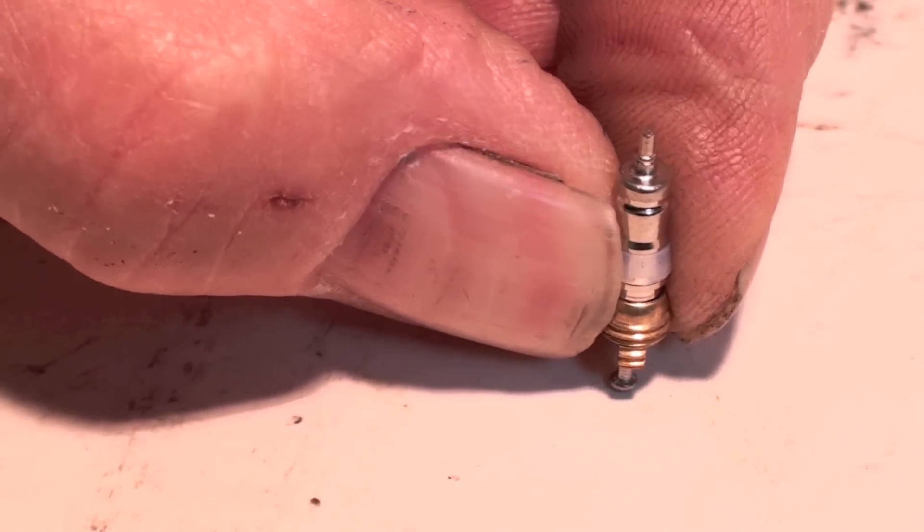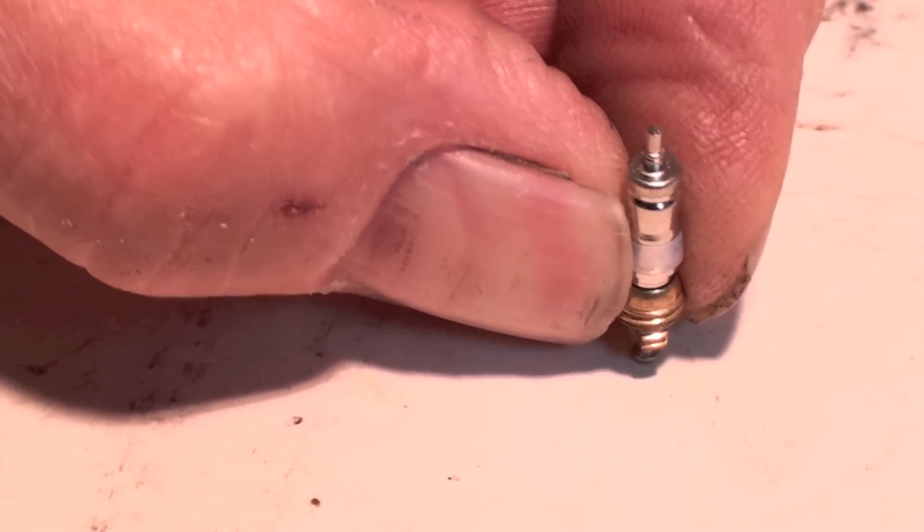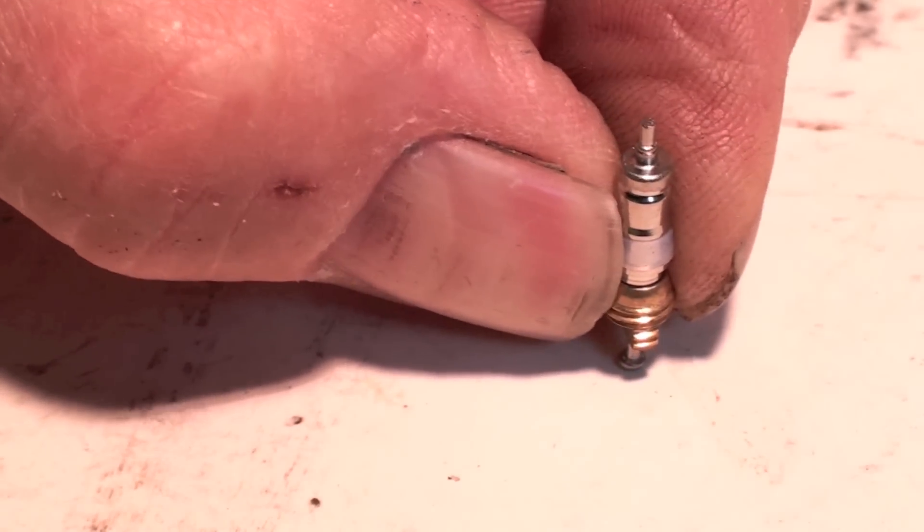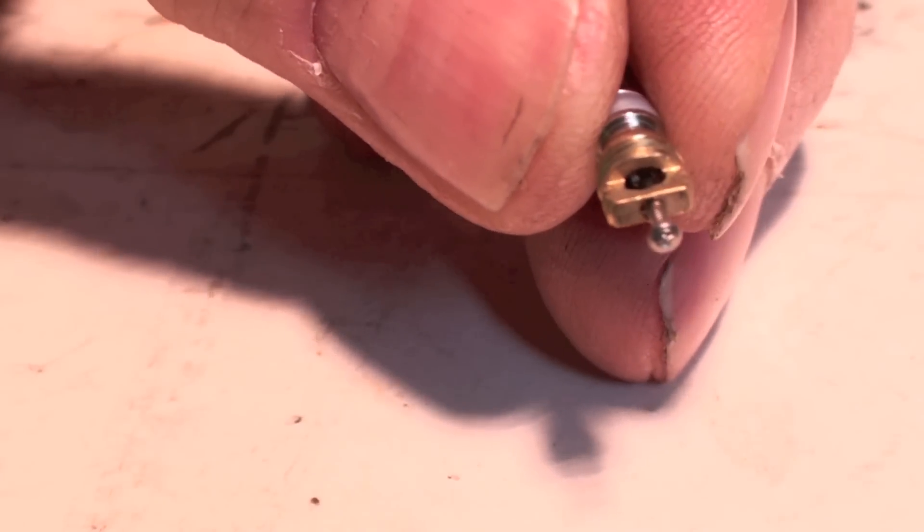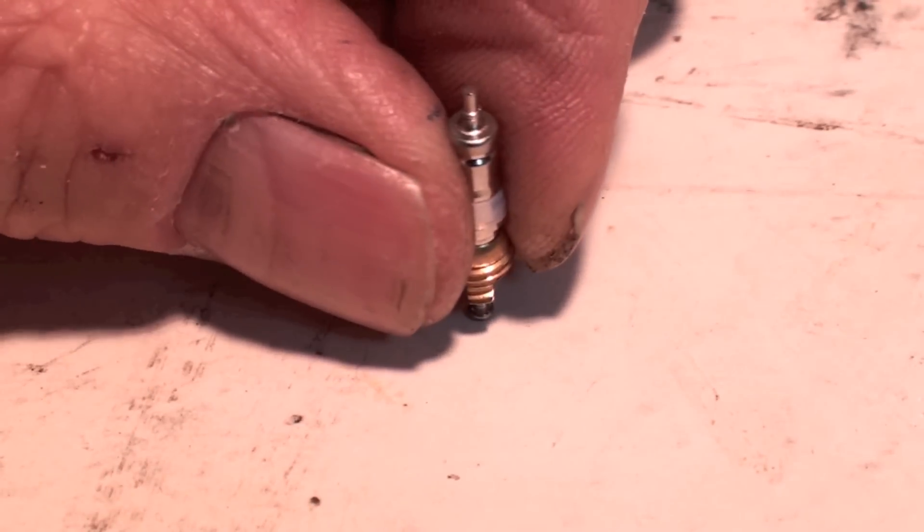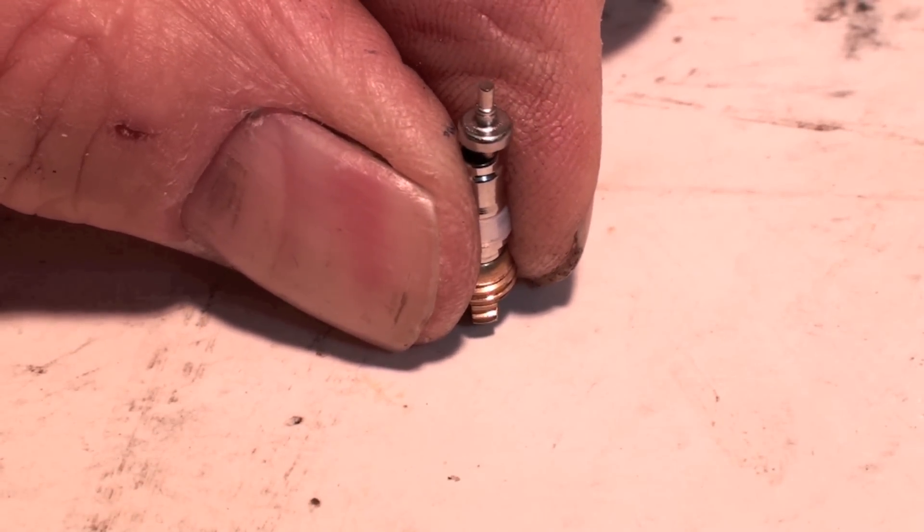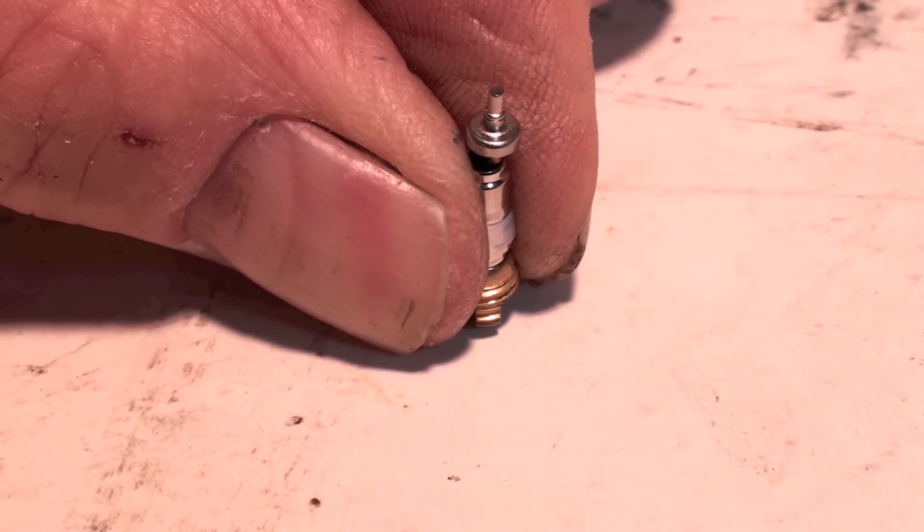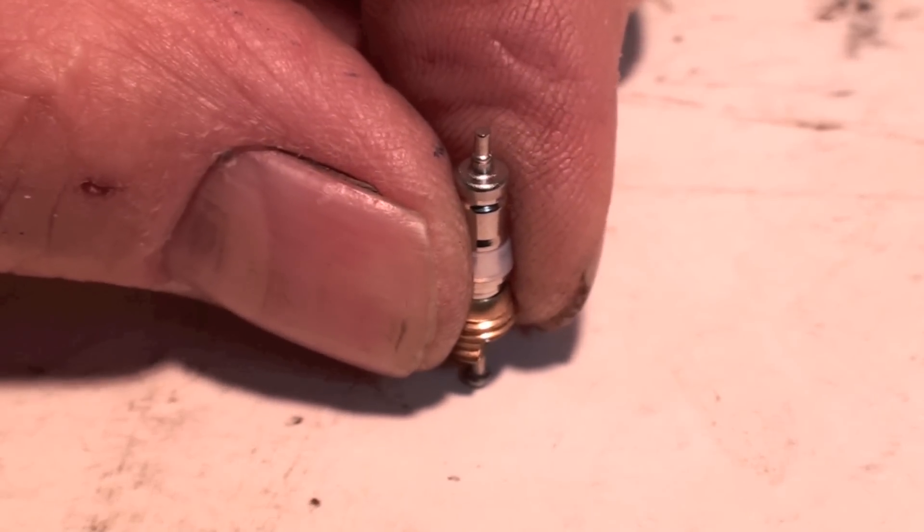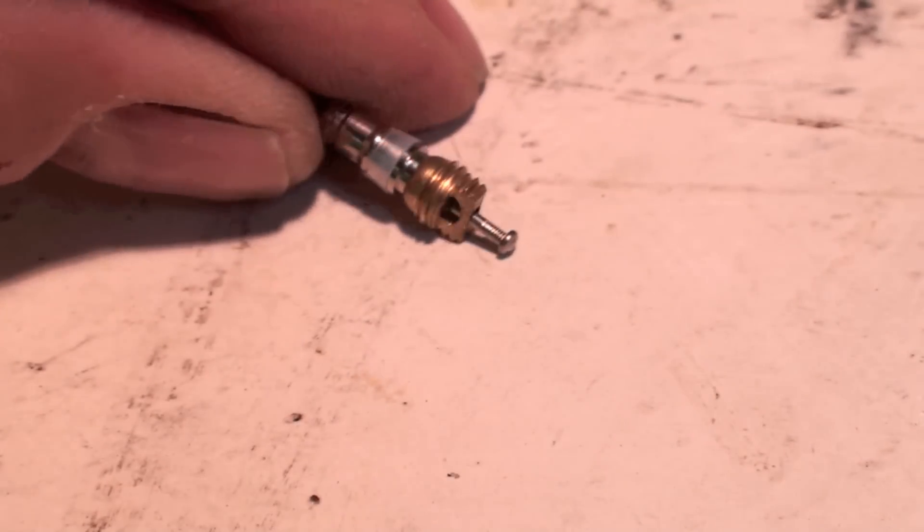When that button is depressed this opens. That's your actual valve right there, obviously spring-loaded. You have a depressor that pushes down that button when you put your hose on and that gives the opening. Of course it closes by itself.